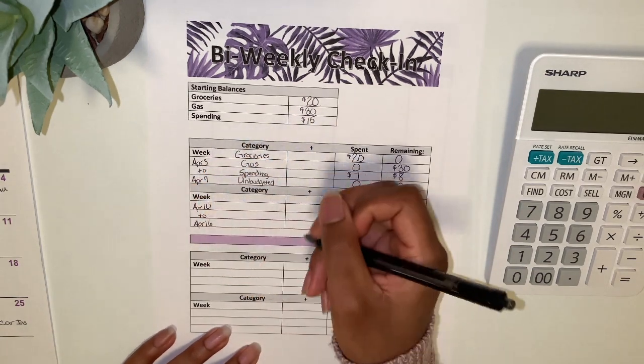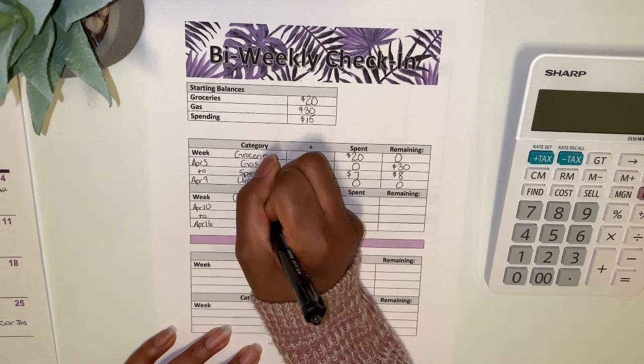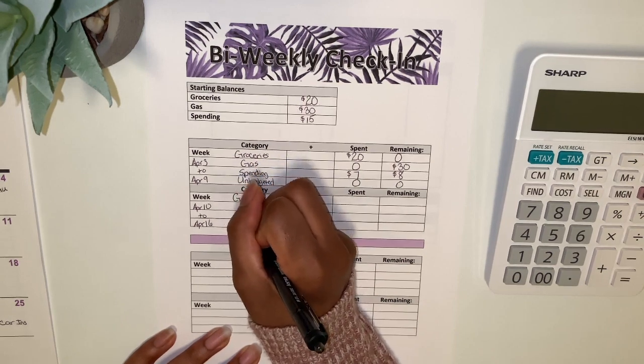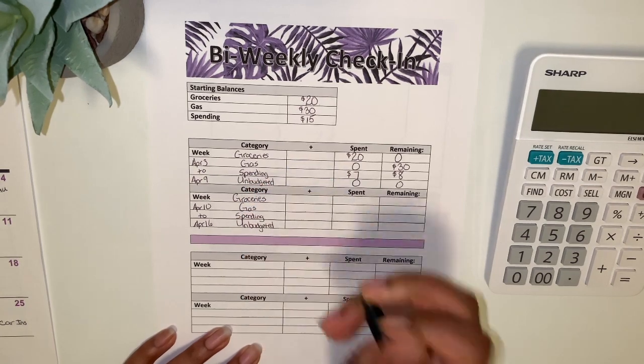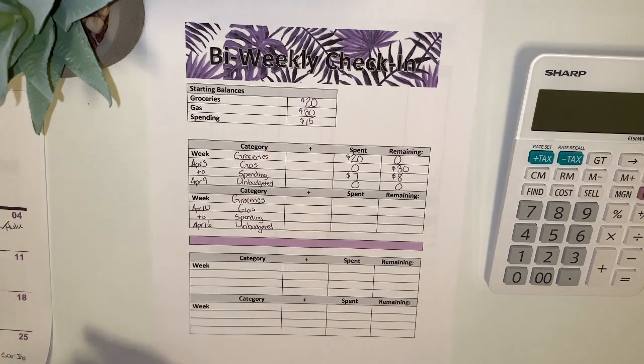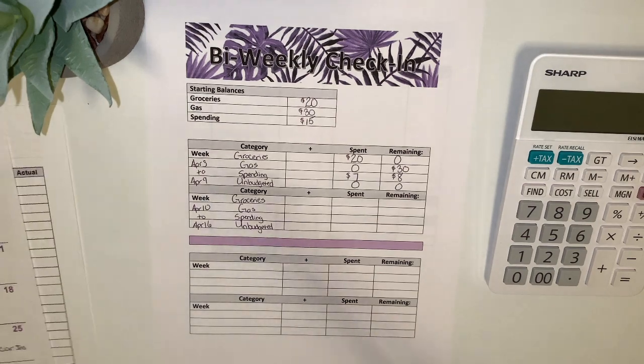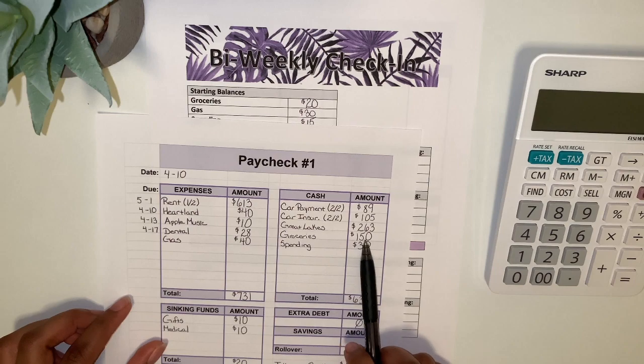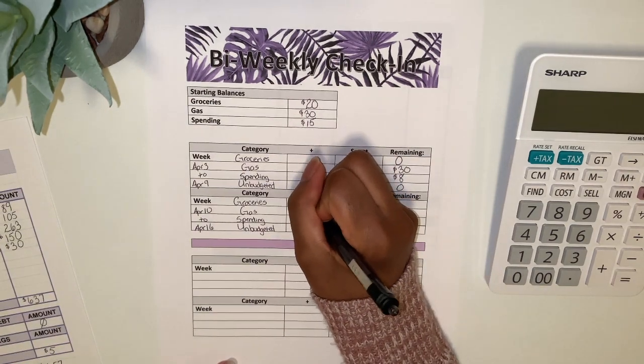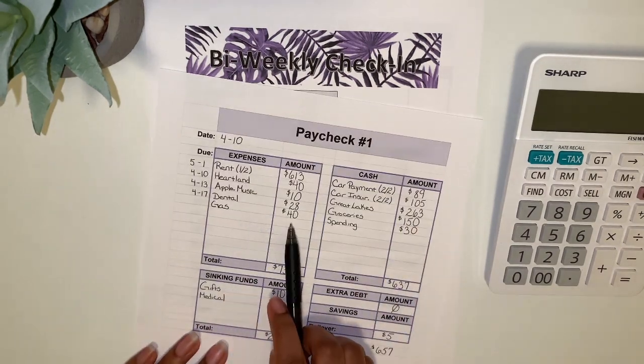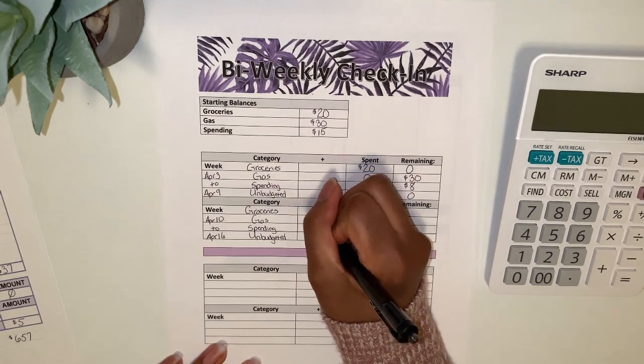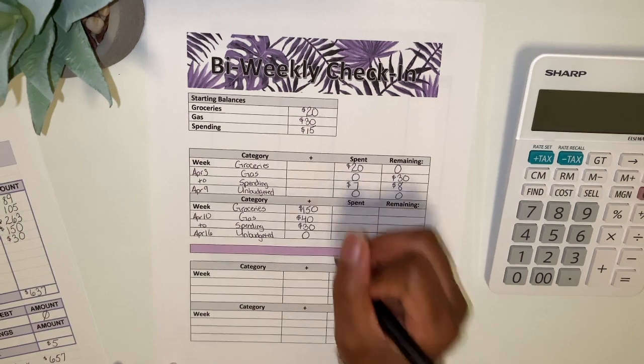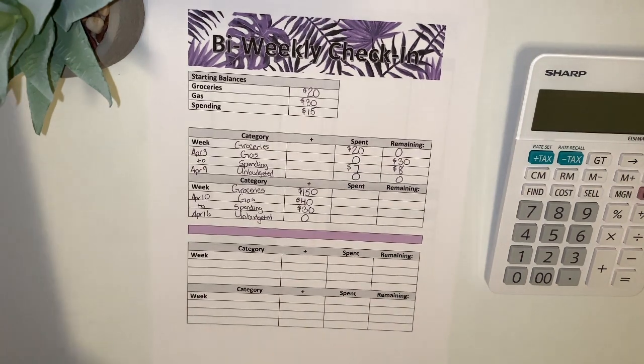Okay, then we move on to April 10th to the 16th, so I'm just going to write my same categories again: groceries, gas, spending, and unbudgeted. So where I get this from, I just pull in my paycheck. So if you recall from my last paycheck video, we stuffed groceries with $150, so they're going to get $150. Gas got $40, so they'll just get $40 here. Spending got $30, and then we don't plan anything for unbudgeted.